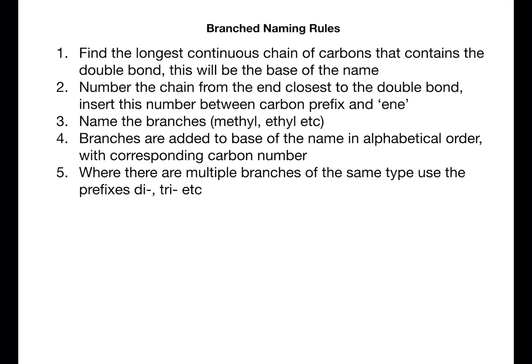There are five rules that we follow when looking at branched chain alkenes. The first is to find the longest continuous chain of carbons that contains the double bond. This will become the base of the name. We choose this because it has the functional group within it and is therefore the most important part of the molecule.